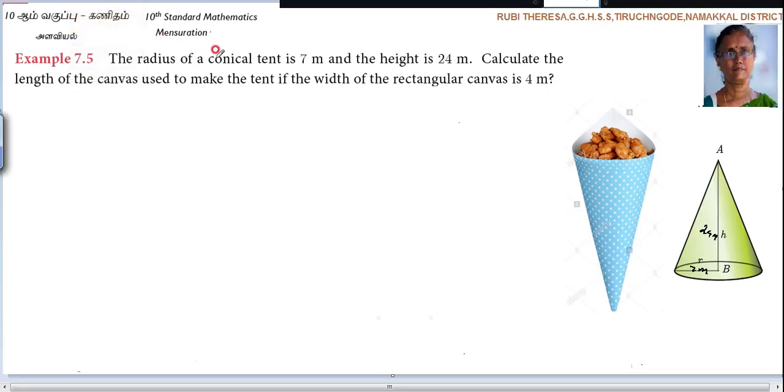The radius of a conical tent is 7 meters and height is 24 meters. It is better to draw the diagram and mention the measurement here. Always for mensuration, it is better to draw the diagrams. Calculate the length of the canvas.